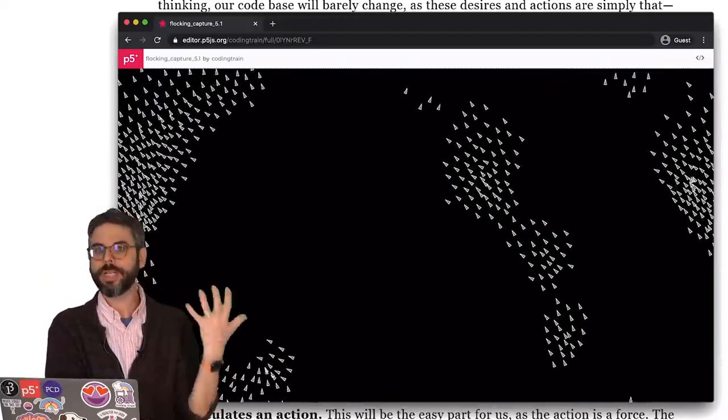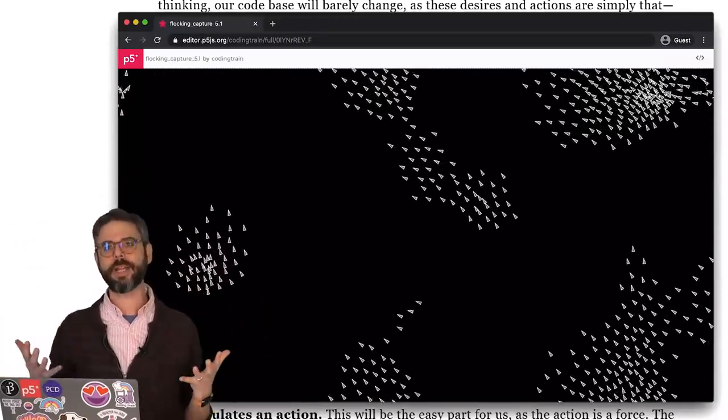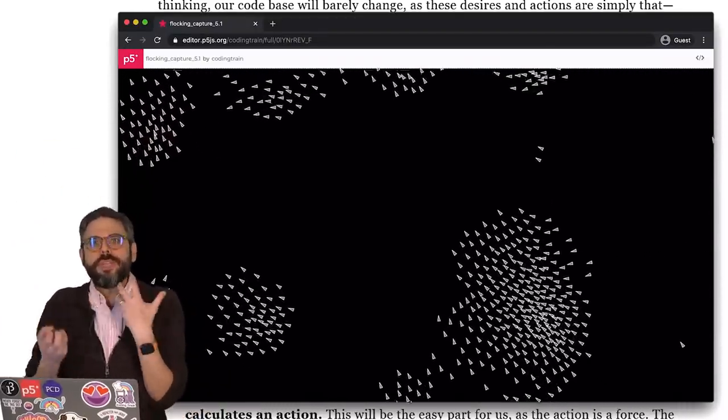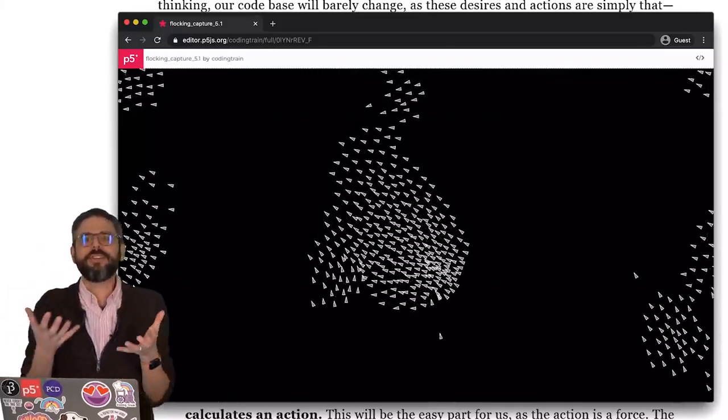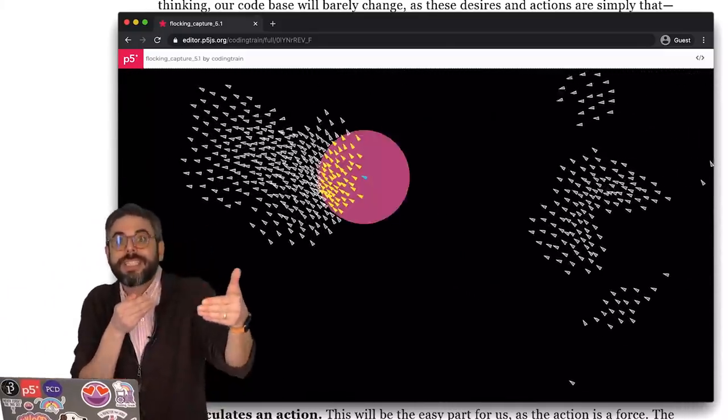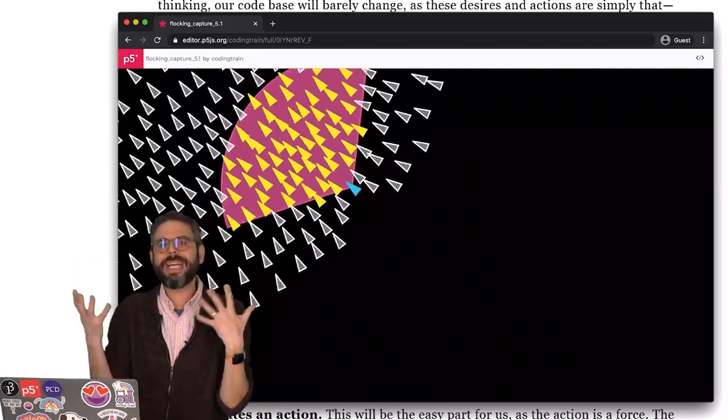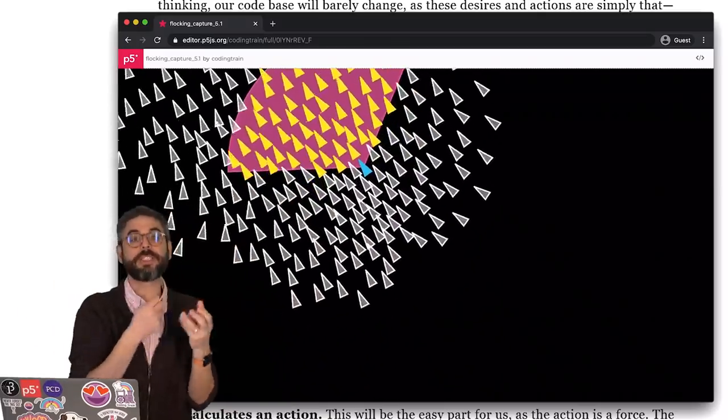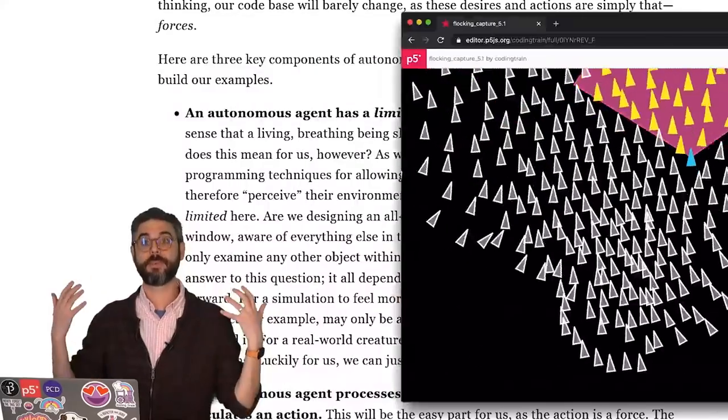It's not an all-knowing creature that can see everything around it, but we're going to get more unique and lifelike behaviors if it can only see within a certain distance or what's right in front of it. Or maybe we think about its perception not as vision, but as some other type of sense-based perception.